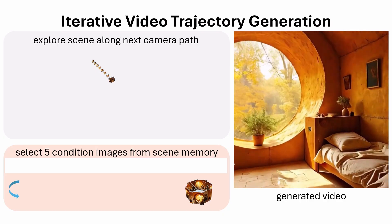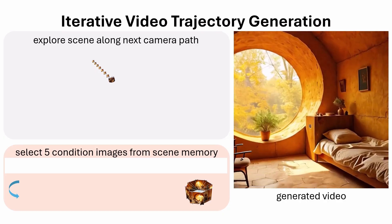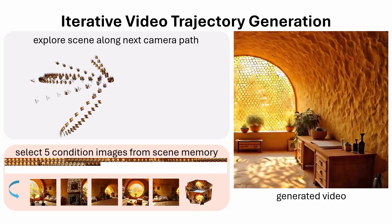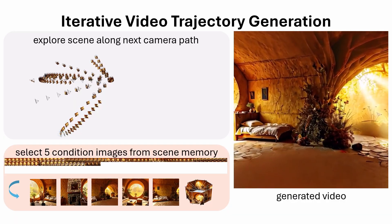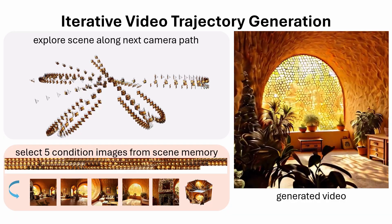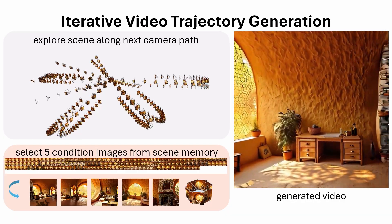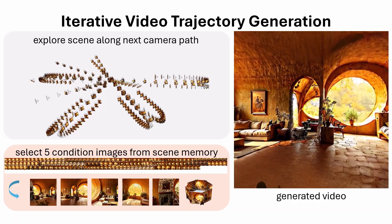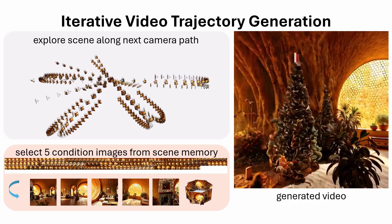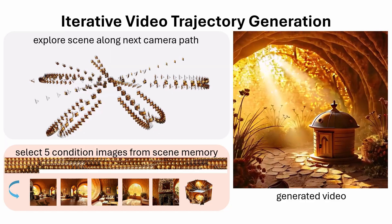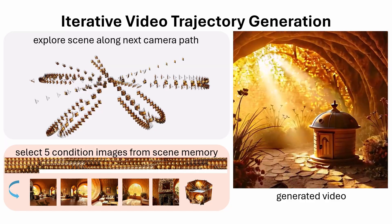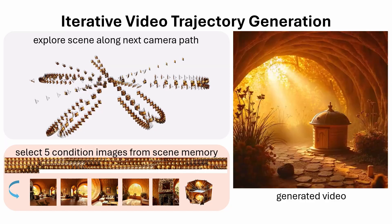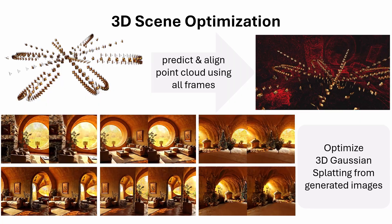Our key idea is a novel scene generation scheme. We pre-define multiple trajectories that explore the scene in depth. We condition a video diffusion model on previous images by sampling the most relevant views from our scene memory. We avoid collisions with generated objects by stopping the trajectory generation in time. We optimize 3D Gaussian splatting from our generated images.